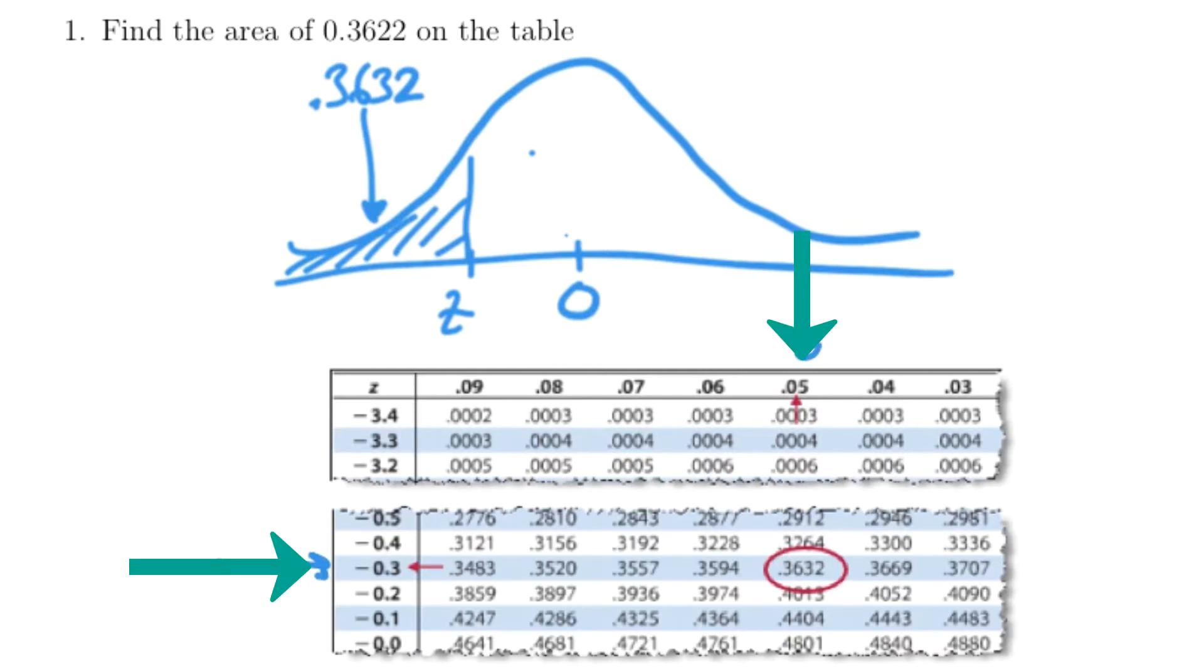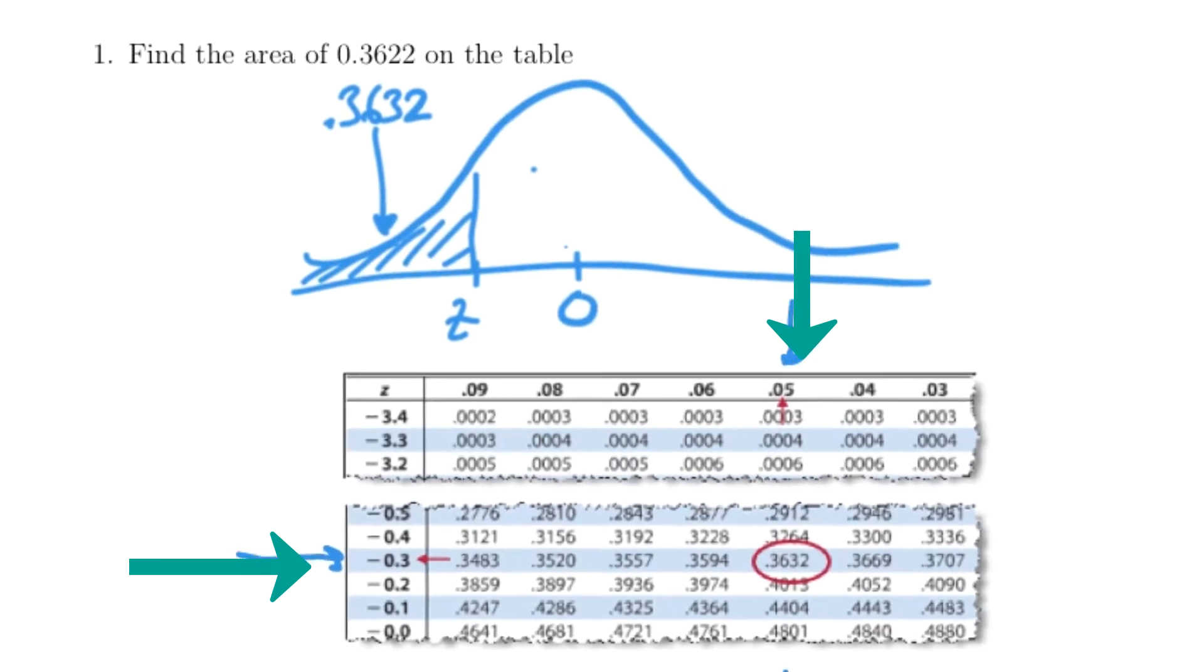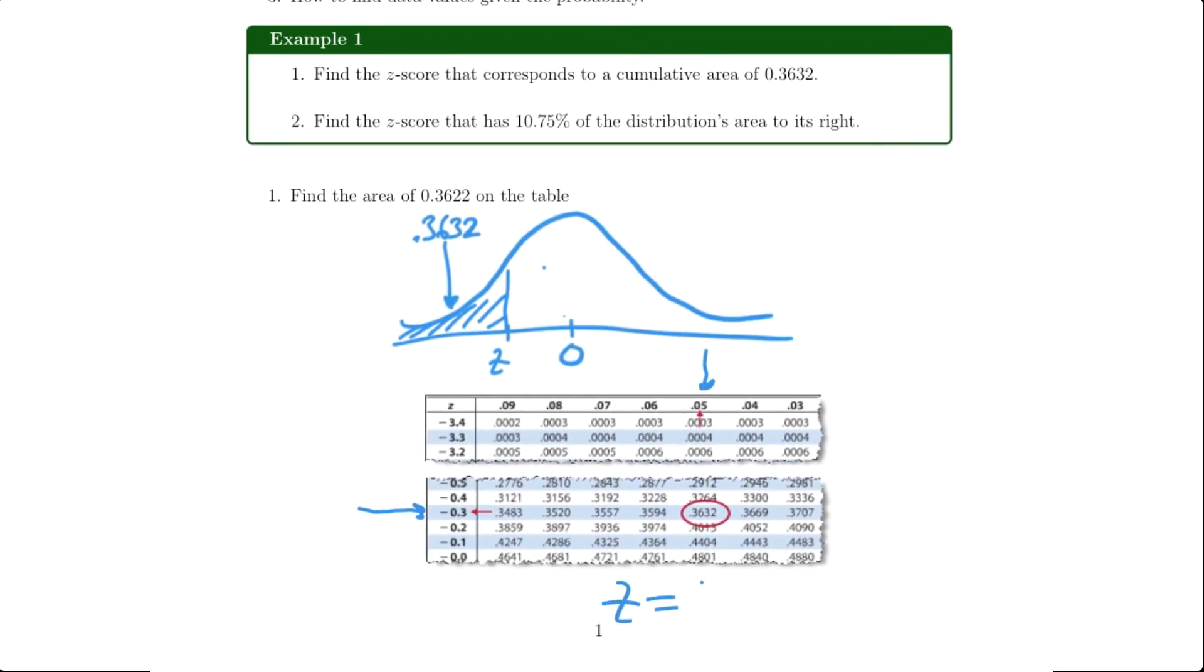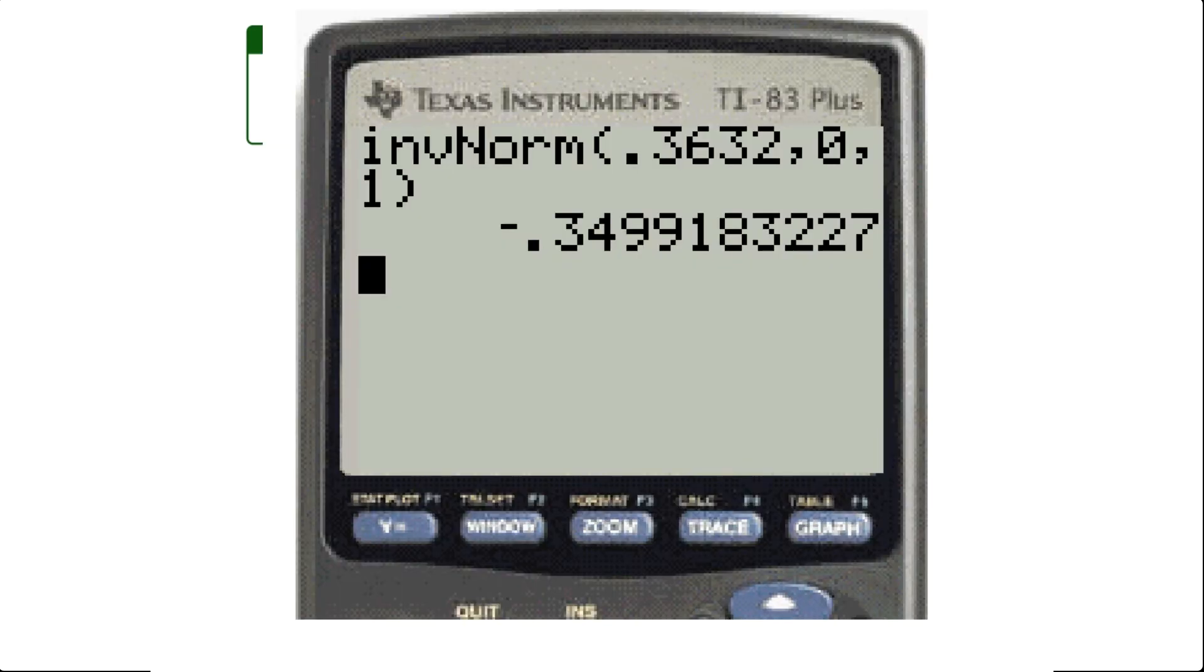Luckily, there's a function on the graphing calculator that will also tell us this value. I'm going to put the picture up on the screen now. You'll go ahead and find where the inverse norm button is.